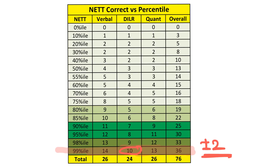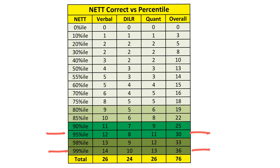That all depends slot by slot, and I'll make a separate video on how normalization is going to play out. So that's your 99 percentile. All general engineer male GEM students need to look at this number in case you want the main IIMs. For OBC category, the numbers for main IIM calls are 12 questions correct in Verbal, 8 in DILR, and 7 in Quant.